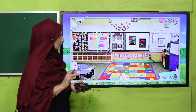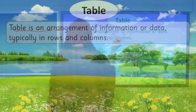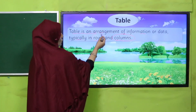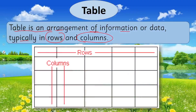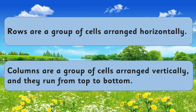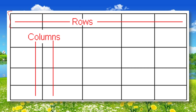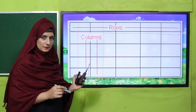Now, what are tables and timetables? A table is an arrangement of information or data, typically in rows and columns. There are always two things we can find in a table: rows and columns. Rows are a group of cells arranged horizontally. Columns are a group of cells arranged vertically, running from top to bottom. The horizontal lines are rows and the vertical lines are columns.